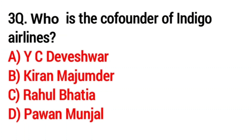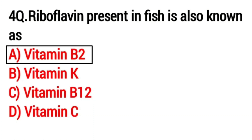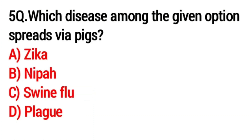Question number three: who is the co-founder of IndiGo Airlines? Answer: C, Rahul Bhatia. Question number four: the riboflavin present in fish is also known as? Answer option A, Vitamin B2.